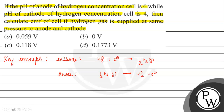Now, if we talk about the EMF of this cell, what will happen? E_cell equals E°_cell minus 0.0591 divided by N, multiplied by log of product over reactant.